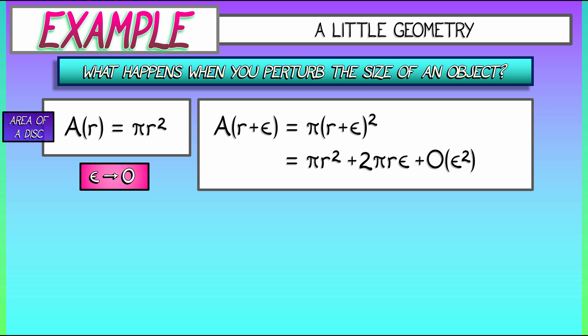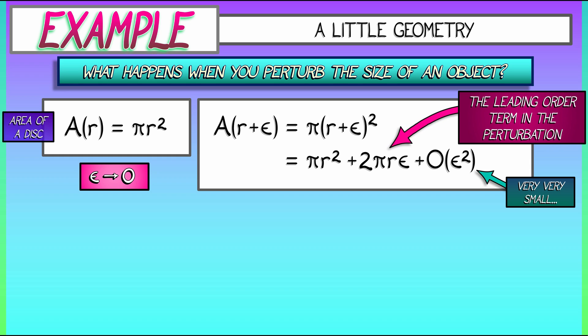I mean, we know exactly what it is, right? We know what the coefficient in front of it is, but let's throw it in the trash. And let's think about what this really means. That Big O epsilon squared term, when epsilon is small, that's really, really small. But the perturbation, the change in the area is going to be mostly controlled by that leading order term, the 2 pi r epsilon.